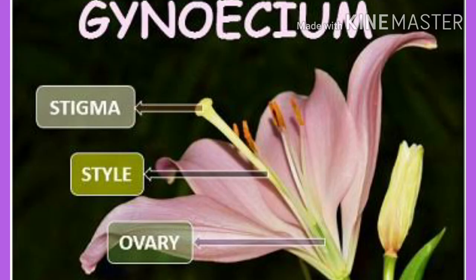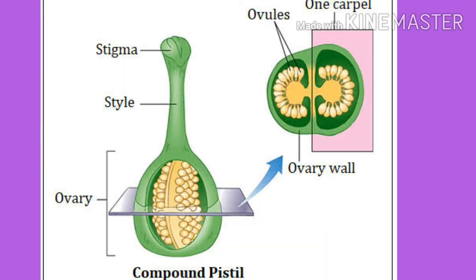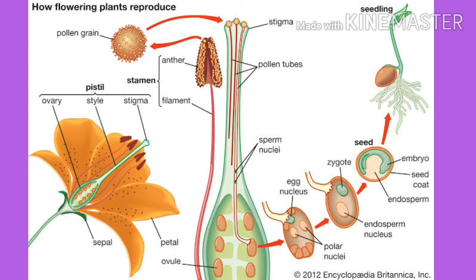The gynoecium is the female reproductive organ of the flower. It is formed by one or more pistils. A single pistil may contain one or more carpels. Each carpel contains ovary, style, and stigma. The ovary is the enlarged basal portion of the gynoecium.